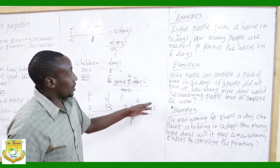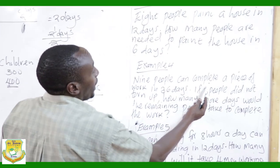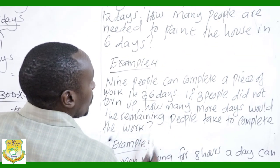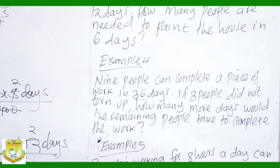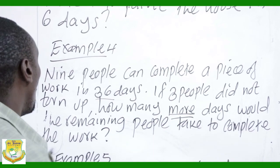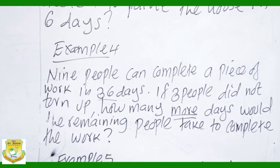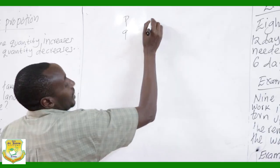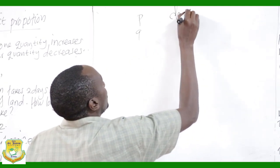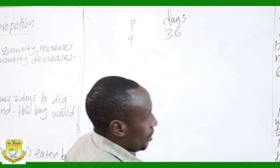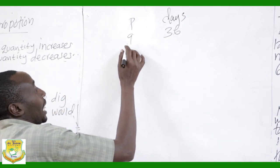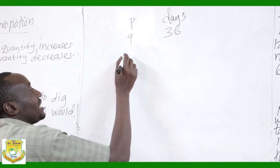Example 4: Nine people can complete a piece of work in 36 days. Three people did not turn up. How many more days would the remaining people take to complete the work? If 3 people did not turn up, then 9 minus 3 gives 6 people remaining.